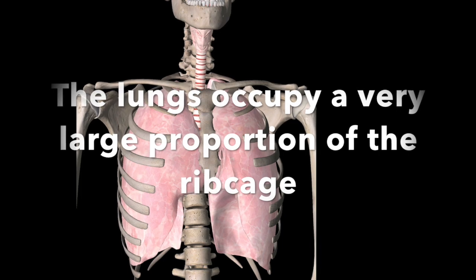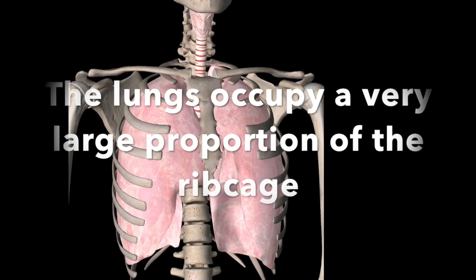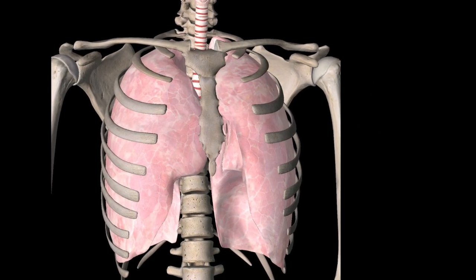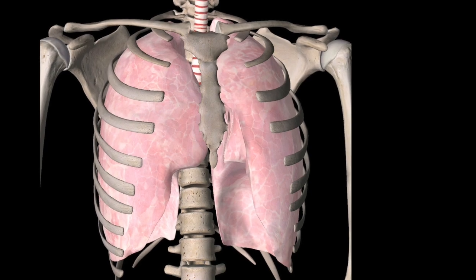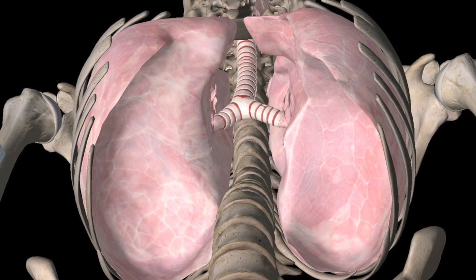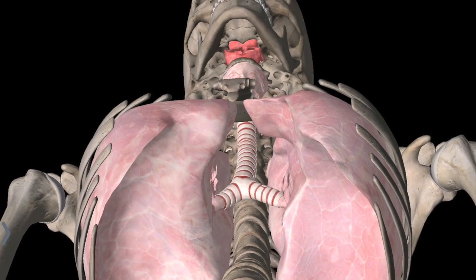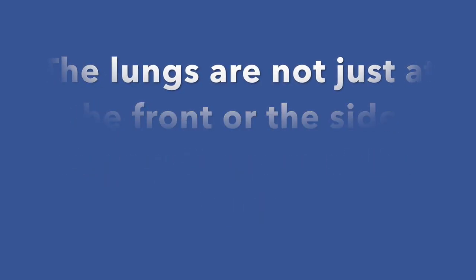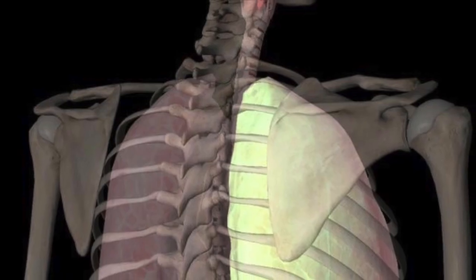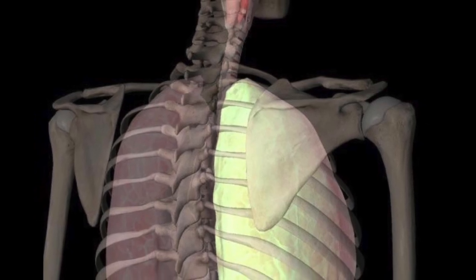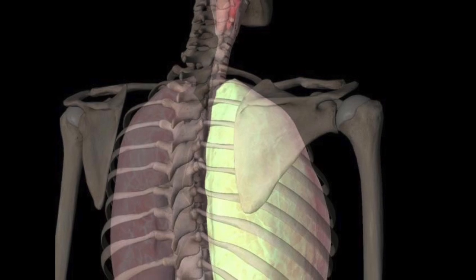The lungs occupy a very large proportion of the rib cage. You can see here how the lungs are coming into the front of the rib cage and also to the side, and you can see at the bottom how they come down to the very bottom ribs. The lungs are not just at the front or the side — largely they are at the back. You can see here highlighted the right lung and how it comes right up to your shoulder, going down to the very bottom end of the rib cage.